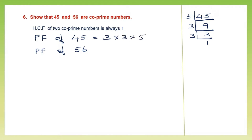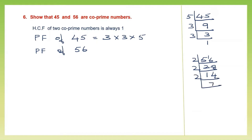Let's find the prime factors of 56. We can start with 2. 2 eights are 16, 2 fours are 8, 2 twos are 4, 2 sevens are 14, and 7 ones are 7. So the prime factors of 56 are 2 × 2 × 2 × 7.